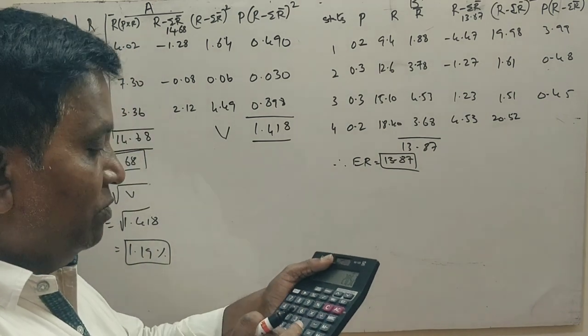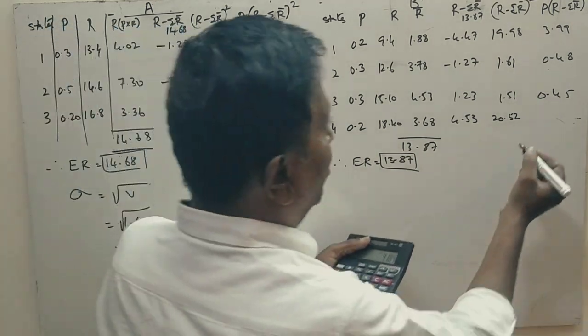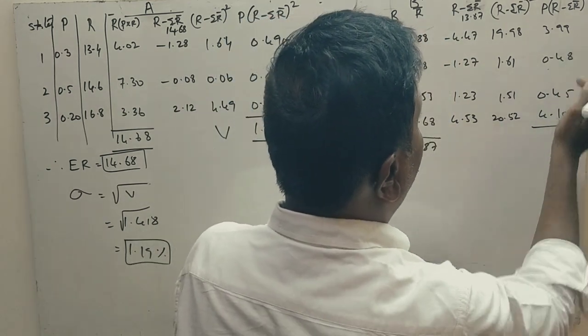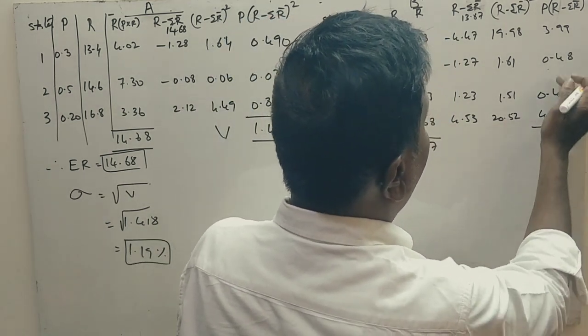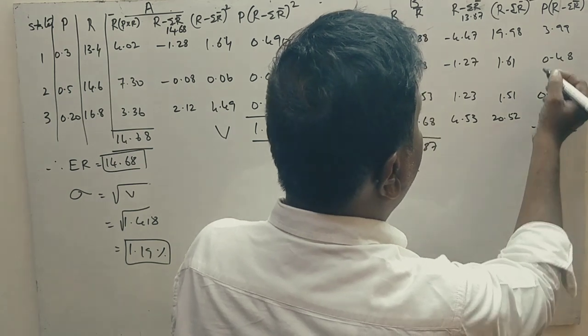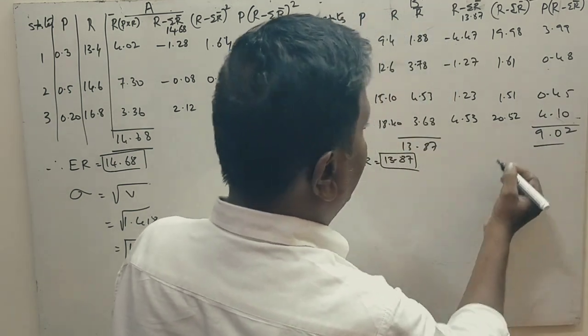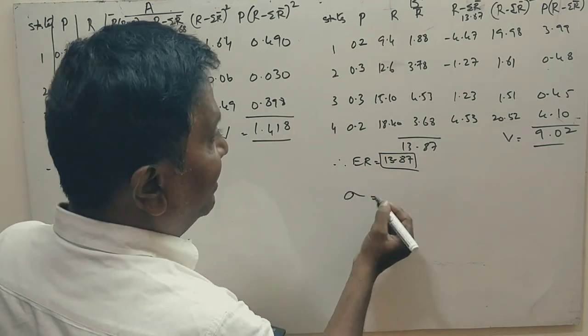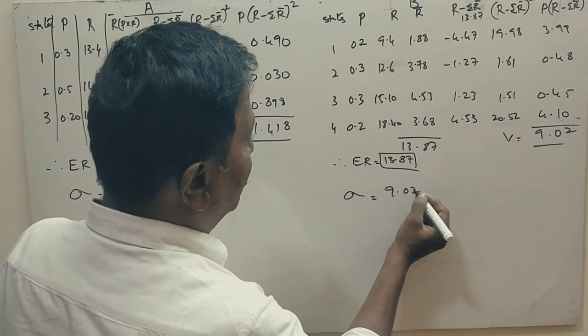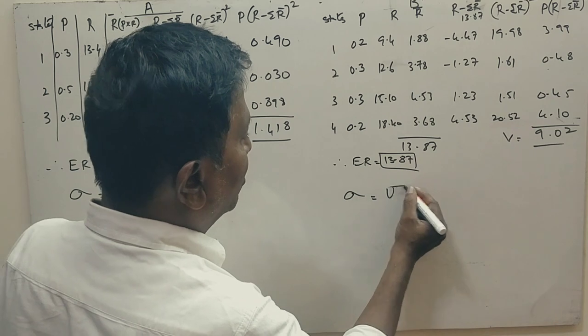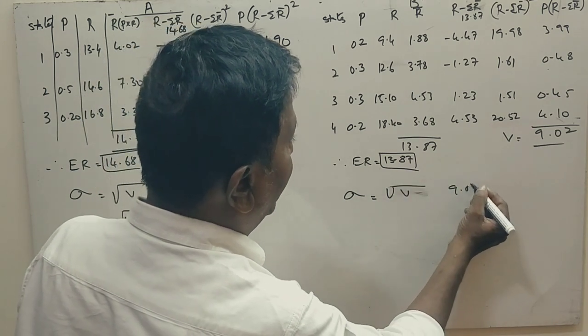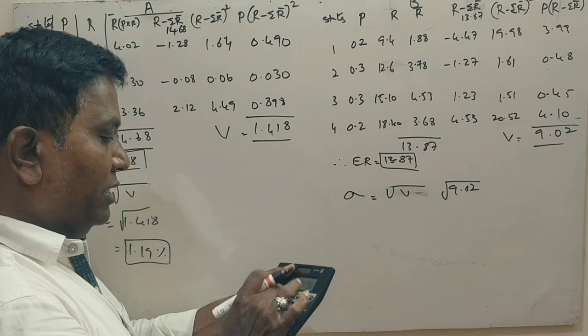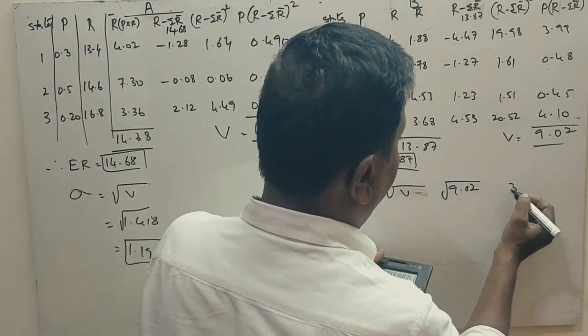Multiply by probability: 0.2 gives 3.99, 1.61 into 0.3 gives 0.48, 1.51 into 0.3 gives 0.45, 20.52 into 0.2 is 4.10. Variance equals 9.02, so standard deviation equals root of 9.02, which is 3%.